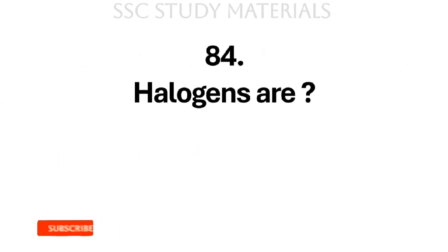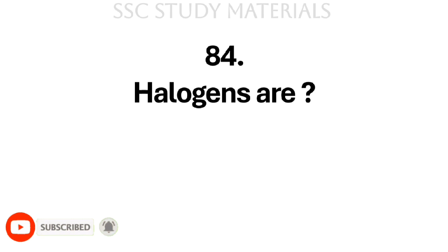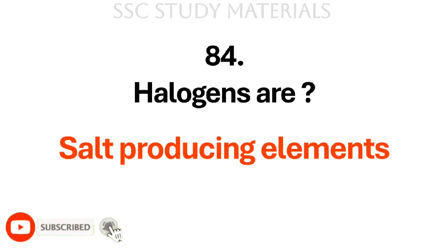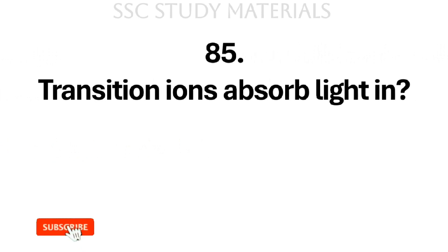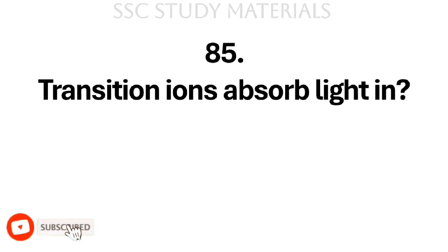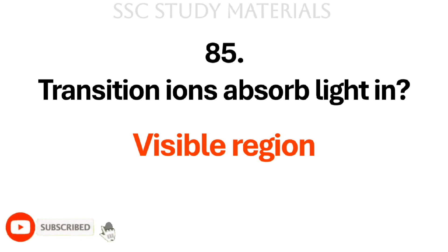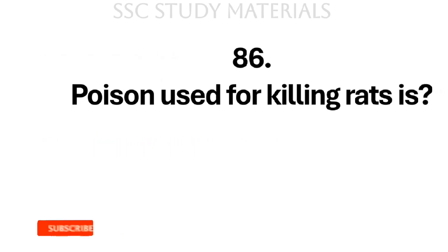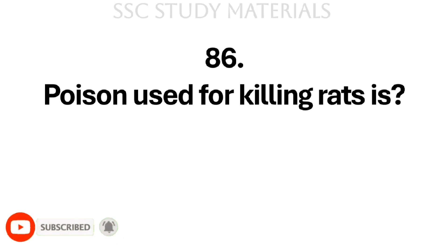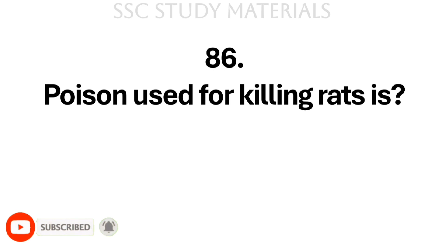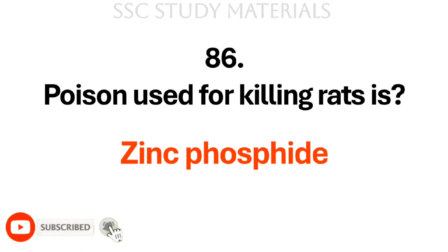Question No. 84: Halogens are? Answer: Halogens are salt-producing elements. Question No. 85: Transition ions absorb light in? Answer: Visible region. Question No. 86: Poison used for killing rats is? Answer: Zinc phosphide.